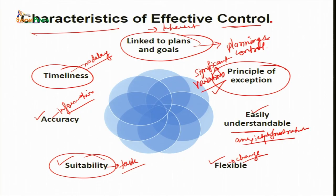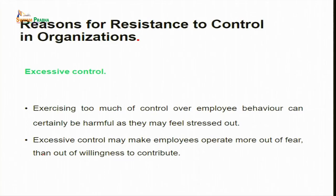Now let us move on to reasons for resistance to control in organizations. Resistance to control means that when some kind of control system is implemented — whether behavioral or task-related — employees generally feel deviated from their status quo. They do not like getting away from their established way of working. Any change through a new control system will not be liked by organizational members, so they will retaliate and revolt, which becomes resistance towards the control system. The first reason for resistance is excessive control. Exercising too much control over employee behavior can certainly be harmful as they may feel stressed out, and excessive control may make employees operate more out of fear than out of willingness to contribute.